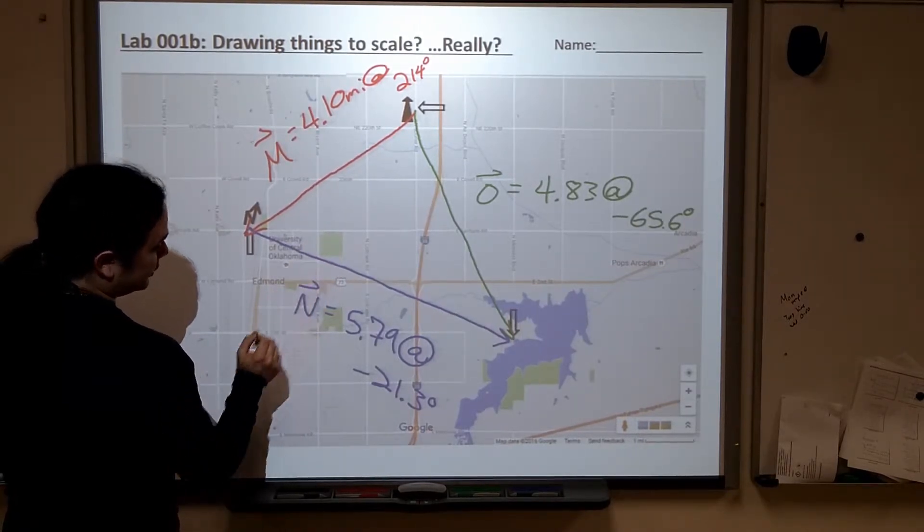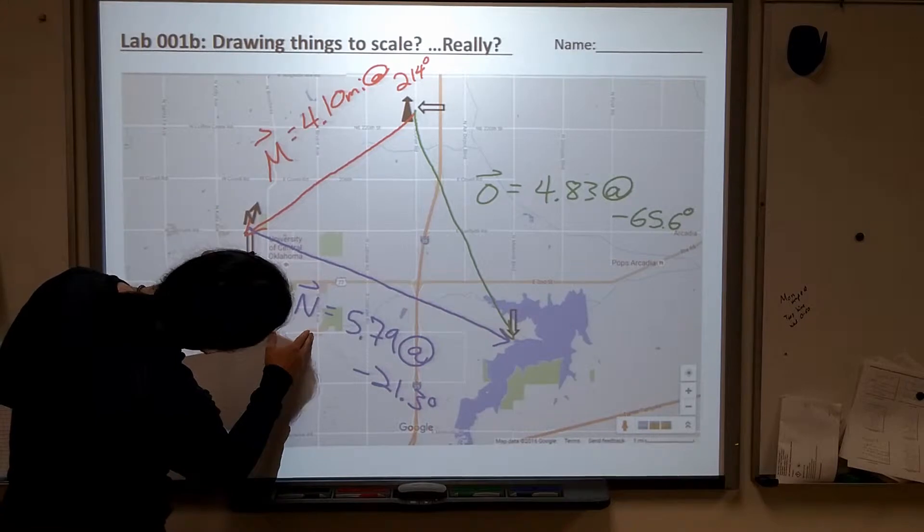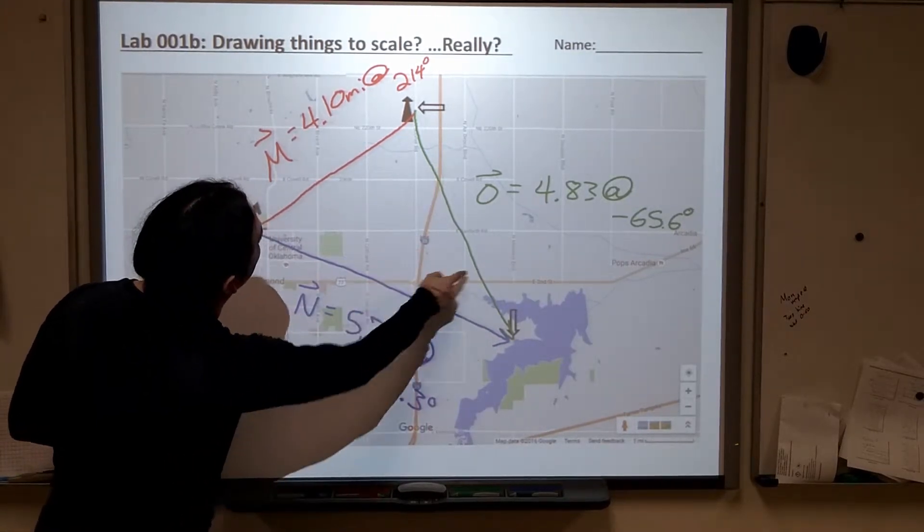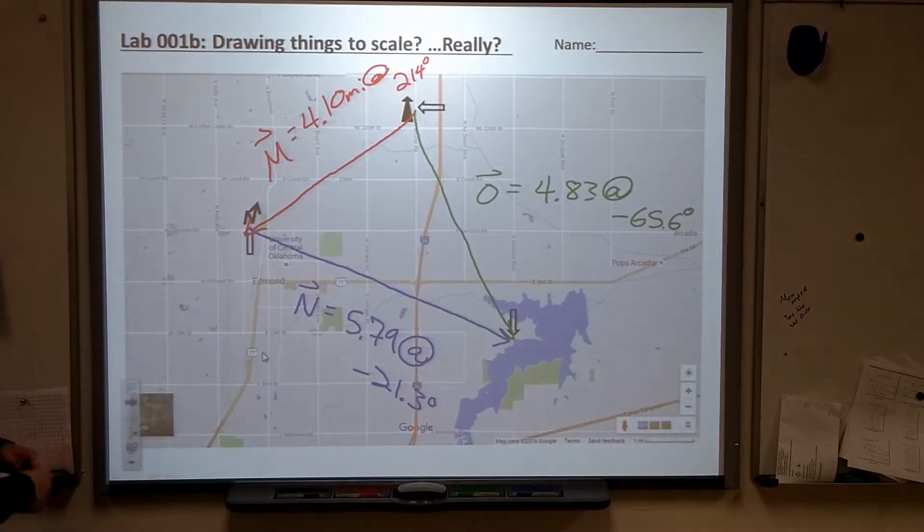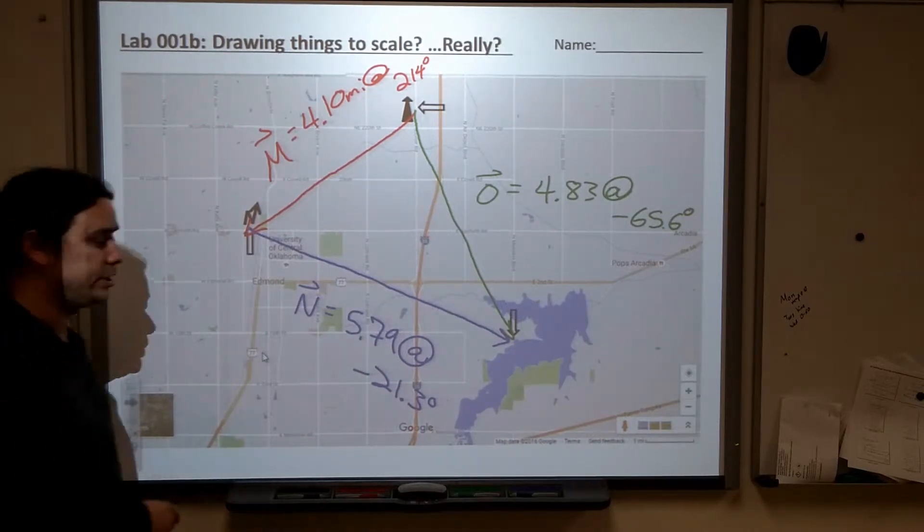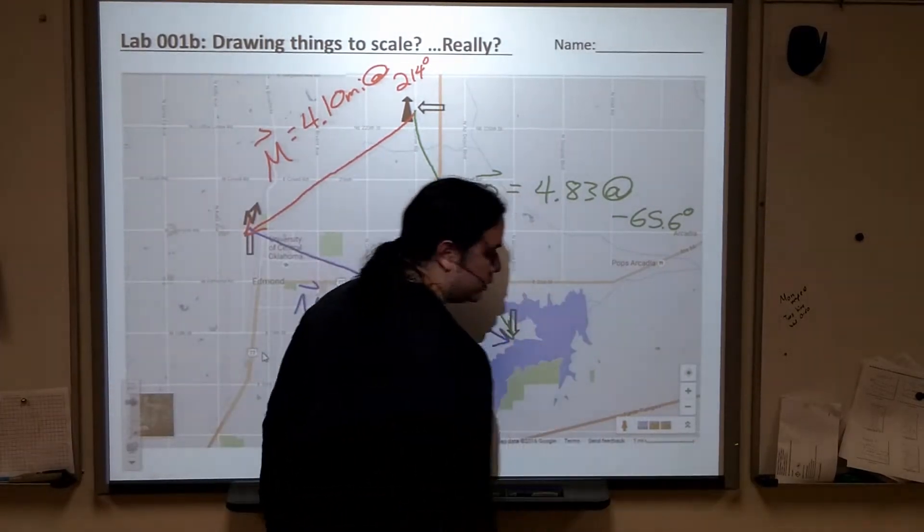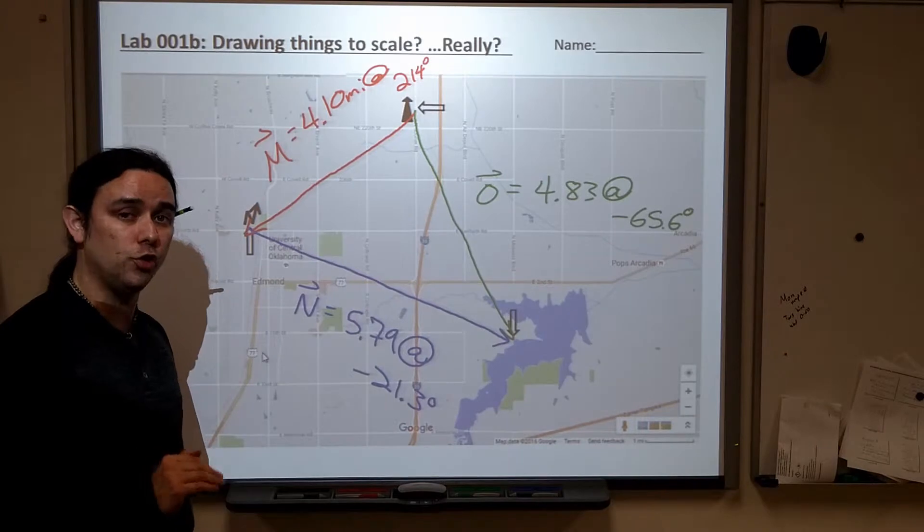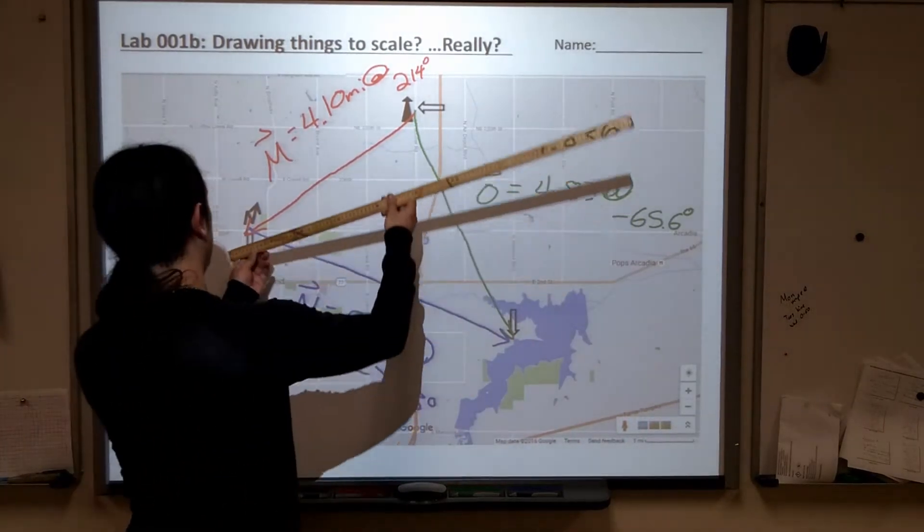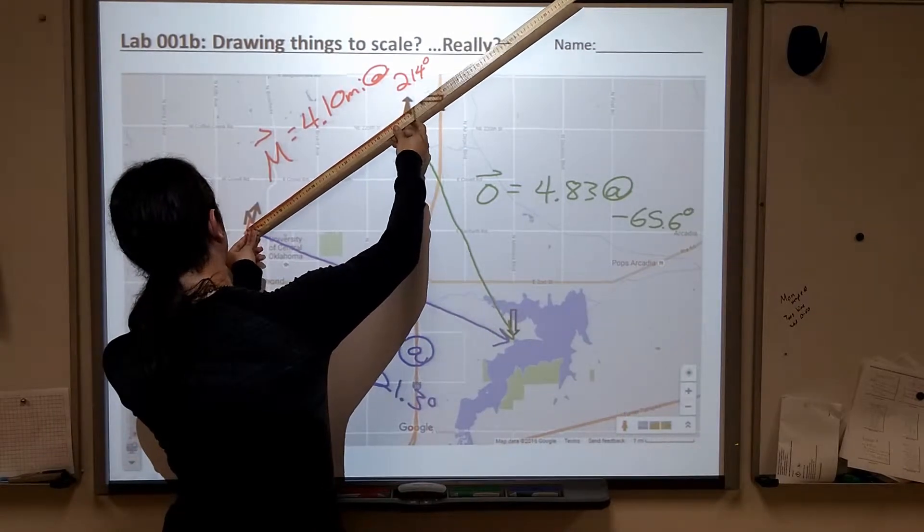and then you have things like Coltrane and Sooner Road and Air Depot, Coffee Creek Road up there. I tried to set it up, depending on your printer settings, that when you print it off, you should find that one mile comes up to right at about two centimeters. So you can go in, and you can actually measure these out. In fact, I'm going to try and do that right here, right now, so we've got a comparison.